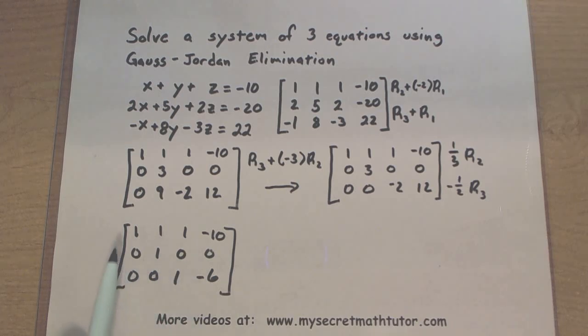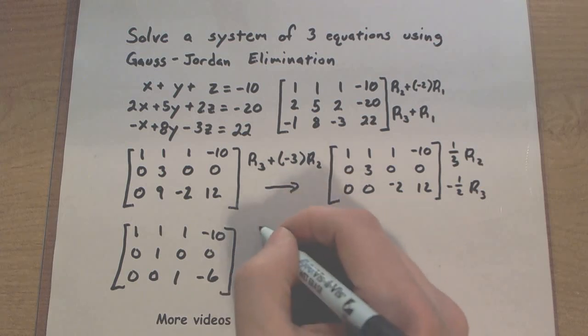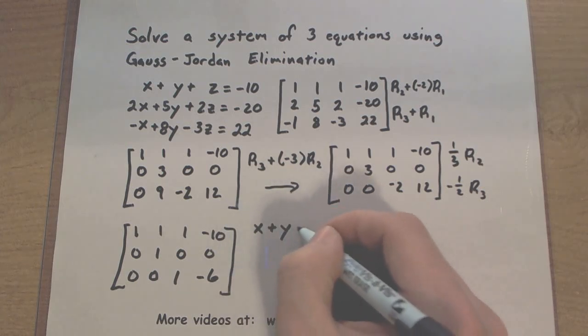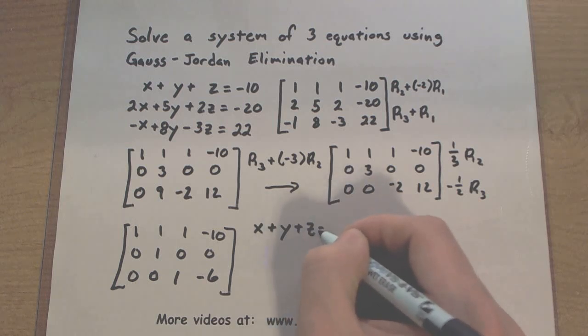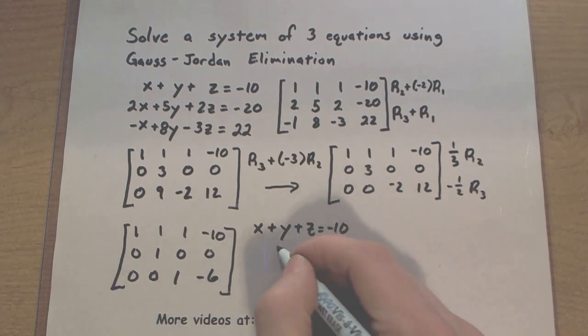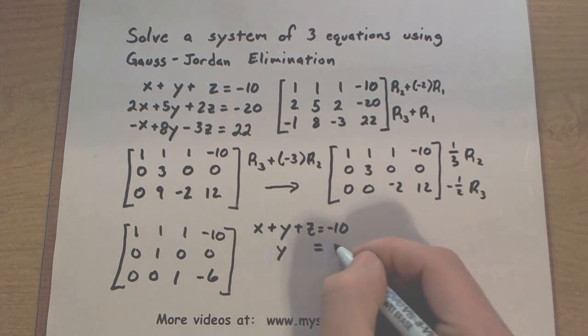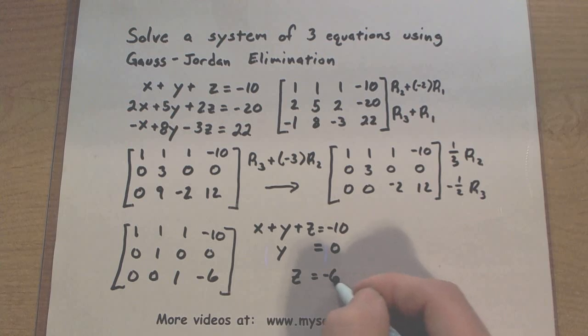Now we're in reduced echelon form. I have 1s along my diagonal, 0s below that diagonal. Things are looking very nice, and they're looking especially nice because here is the system of equations this now represents. I have x plus y plus z equals negative 10, I have y is equal to 0, and z is equal to negative 6.